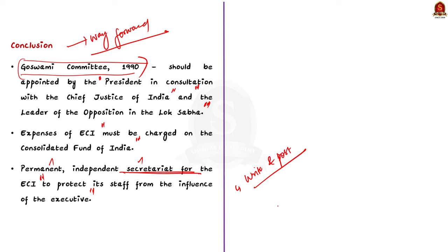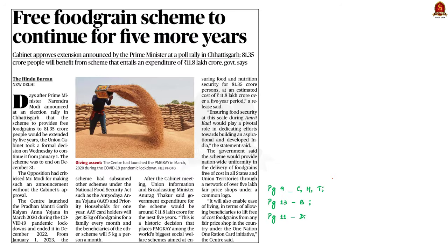This is all regarding this question discussion. We saw about the constitutional safeguards of the Election Commission of India, and in the second part we saw about the issues which are limiting the powers of the ECI. With these learned points, let us conclude this discussion and take up the next news article for our analysis.